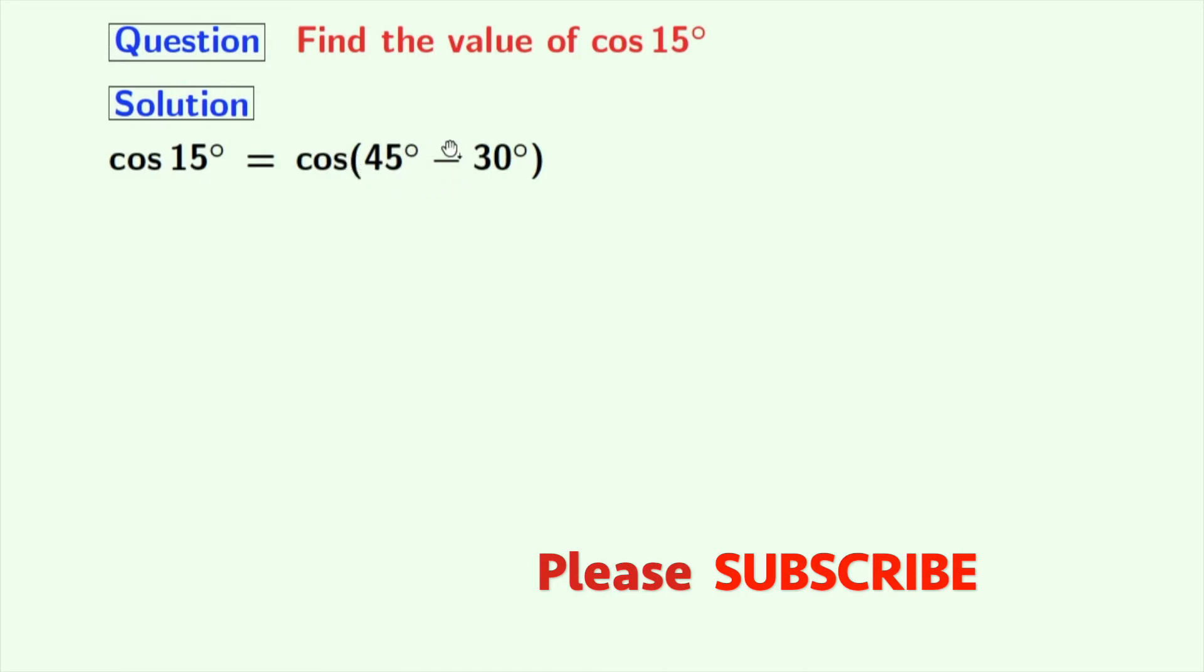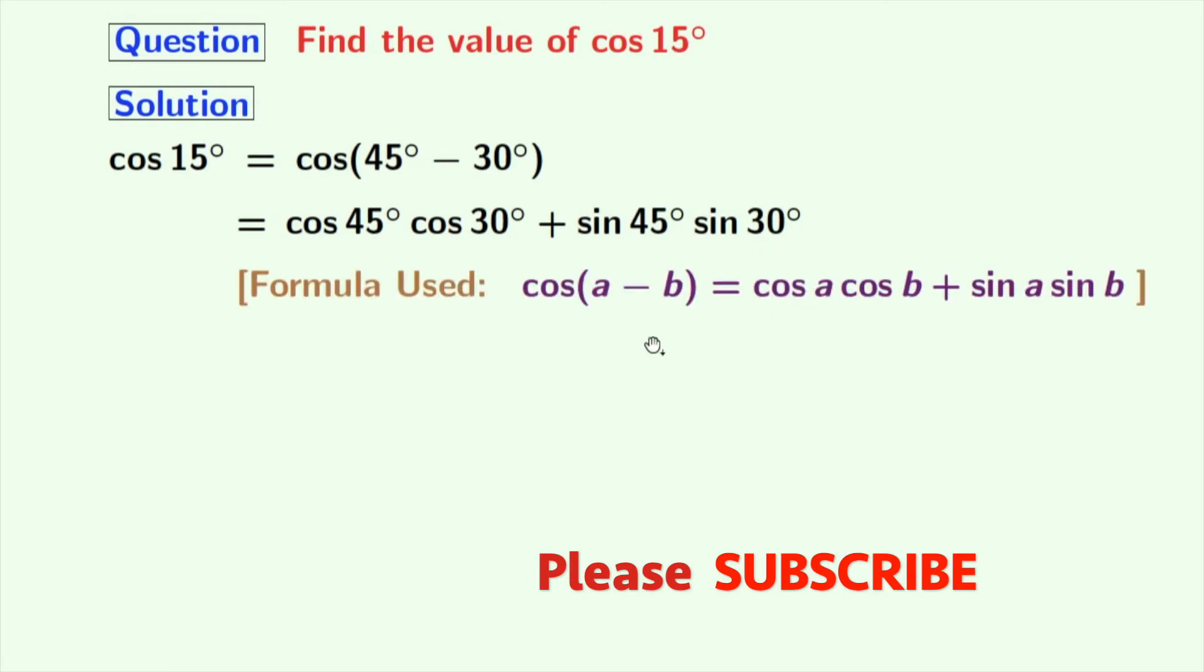We will apply the formula of cos(a - b) here. Doing that, we get cos 45° times cos 30° plus sin 45° times sin 30°. The formula of cos(a - b) is cos a cos b plus sin a sin b. Here a is 45 and b is 30.